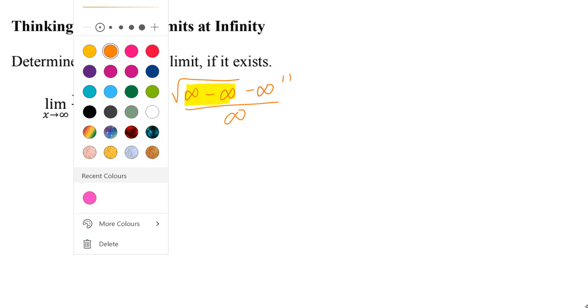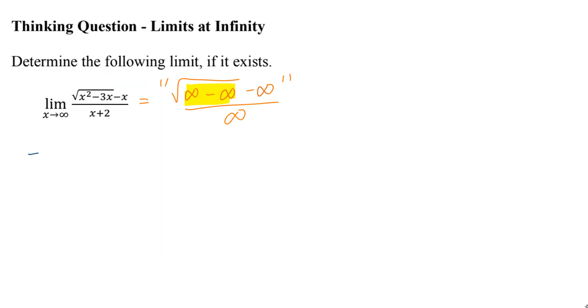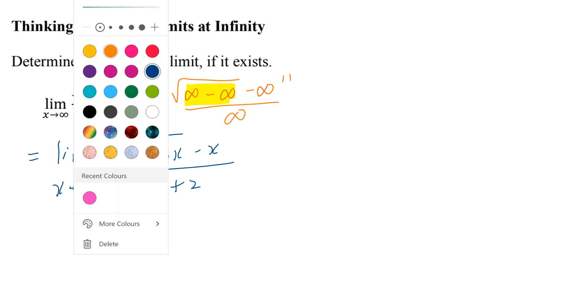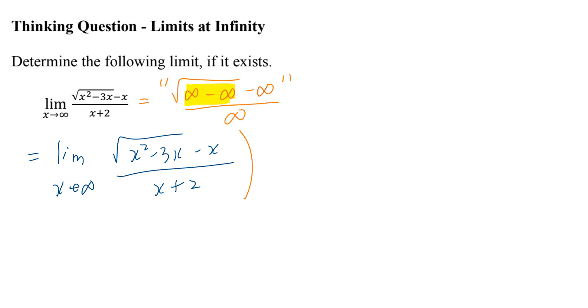This tells you you cannot go straight to plugging it in. So instead, what you can do is copy the question first and multiply the top and the bottom by 1 divided by x. The general approach is you want to multiply the top and the bottom by 1 divided by x to the power of the degree, which is the largest exponent. In this case, it's going to be x to the power of 1.